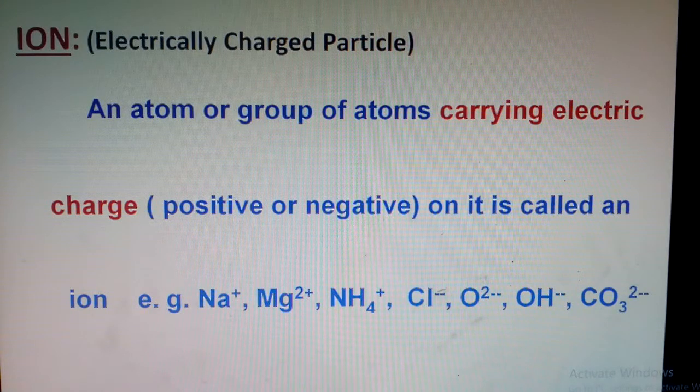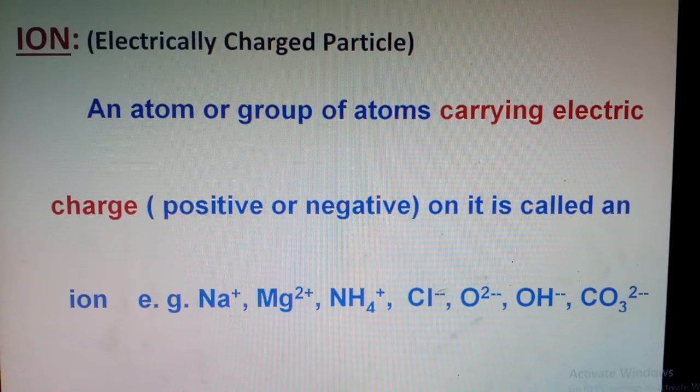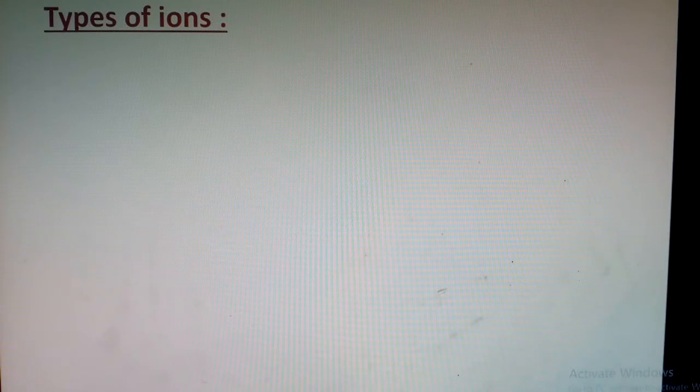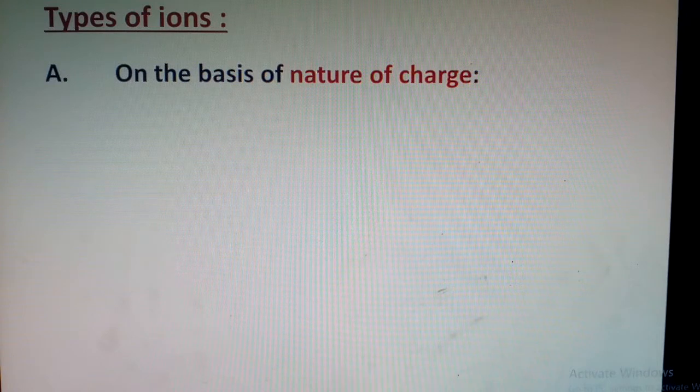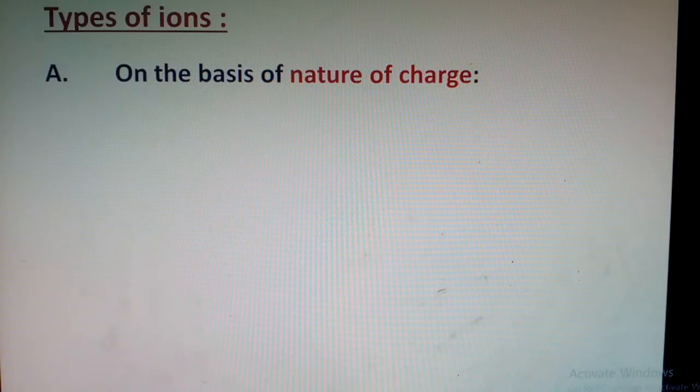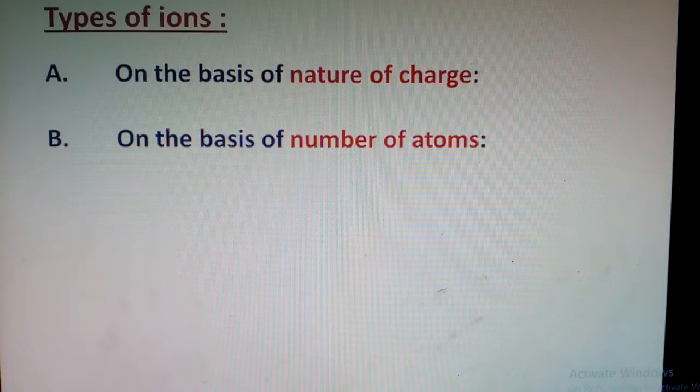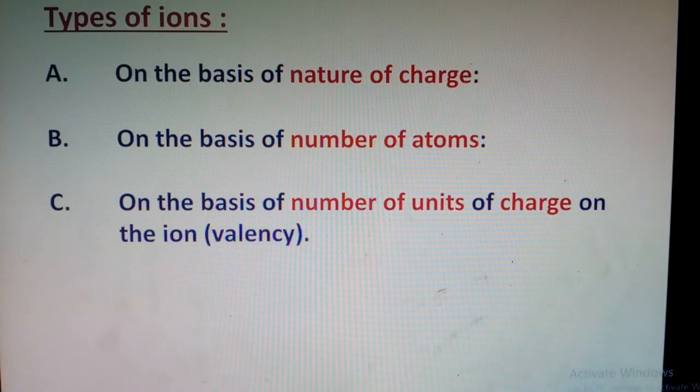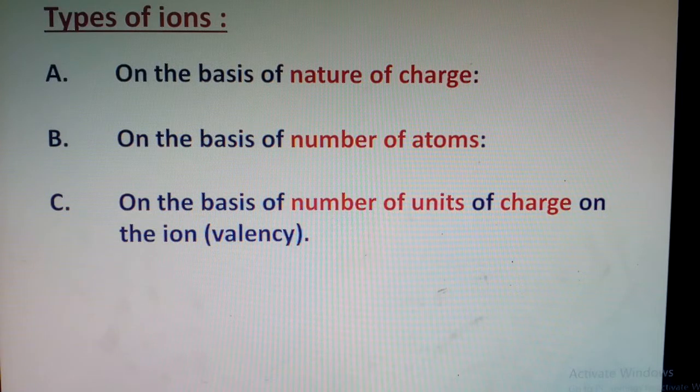Types of ions: There can be different bases for classification. We have three main bases. First is on the basis of nature of charge—whether the ion is positively or negatively charged. Second, on the basis of number of atoms—one, two, or more. Third is on the basis of number of units of charge—that is unipositive, dipositive, or tripositive.